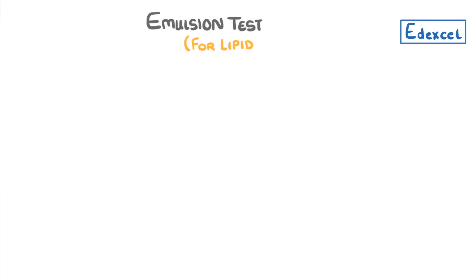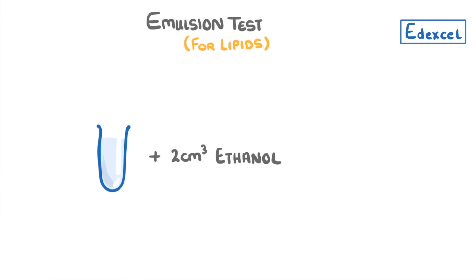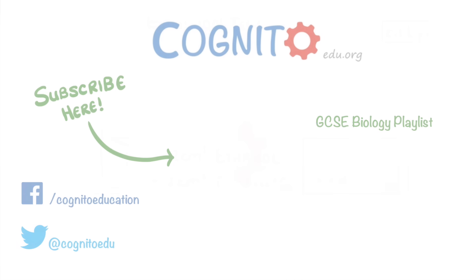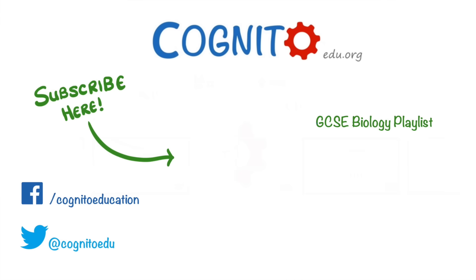If you're doing the Edexcel course you might need to know about the emulsion test for lipids instead. Take your food sample, add two centimeters cubed of ethanol, and shake it vigorously. Then add an equal volume of distilled water — if it goes a cloudy white color it means lipid was present. If there's no cloudy white color then there wasn't any lipid.